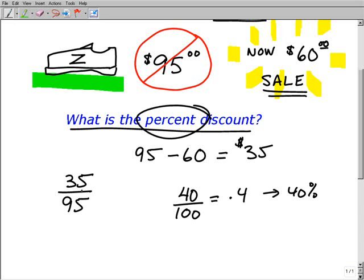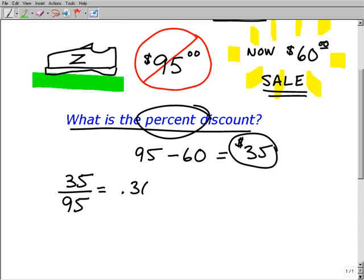It's the same thing you're going to do here. So I want to know thirty five dollars is what percent of ninety five dollars. So you take thirty five and you divide it by ninety five, and you get basically point three six eight. You get some other decimals there, but I'm going to round off. So you get point three six eight.